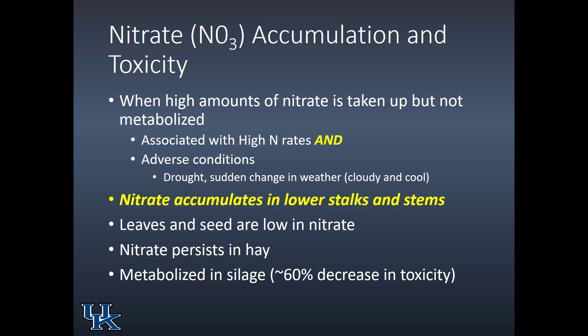Let's look at nitrate accumulation and toxicity more closely. To get nitrate toxicity we need a combination of things: high nitrogen rates and adverse conditions that prevent the plant from metabolizing the nitrates it brings up through the roots into protein. Those adverse conditions could be drought or a sudden change in weather — usually changing from very warm and clear to cloudy and cool — causing growth to stop so nitrates are not metabolized and accumulate in the lower stalks and stems. Leaves and seed are low; nitrate persists in hay and is metabolized in silage.